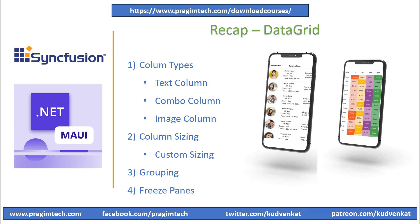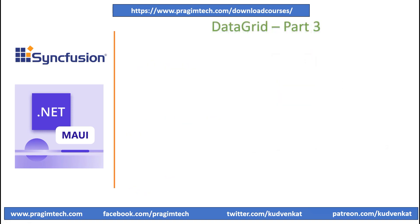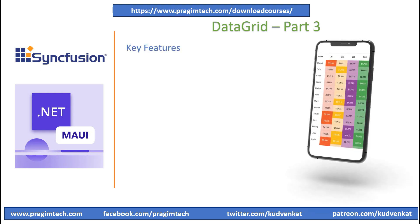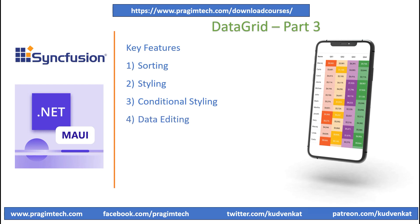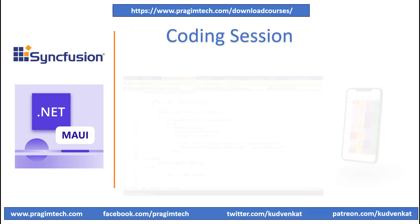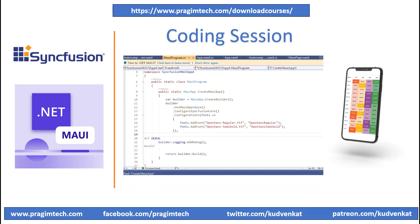I recommend you to review the previous session before proceeding. In this session, we will focus on the rest of the data grid control features. We will learn how to sort columns in the data grid, examine row and column styling and conditional styling, and then concentrate on data editing and bind real-time updates before exporting the data using the data grid component. Let's now switch to the coding session and get going.